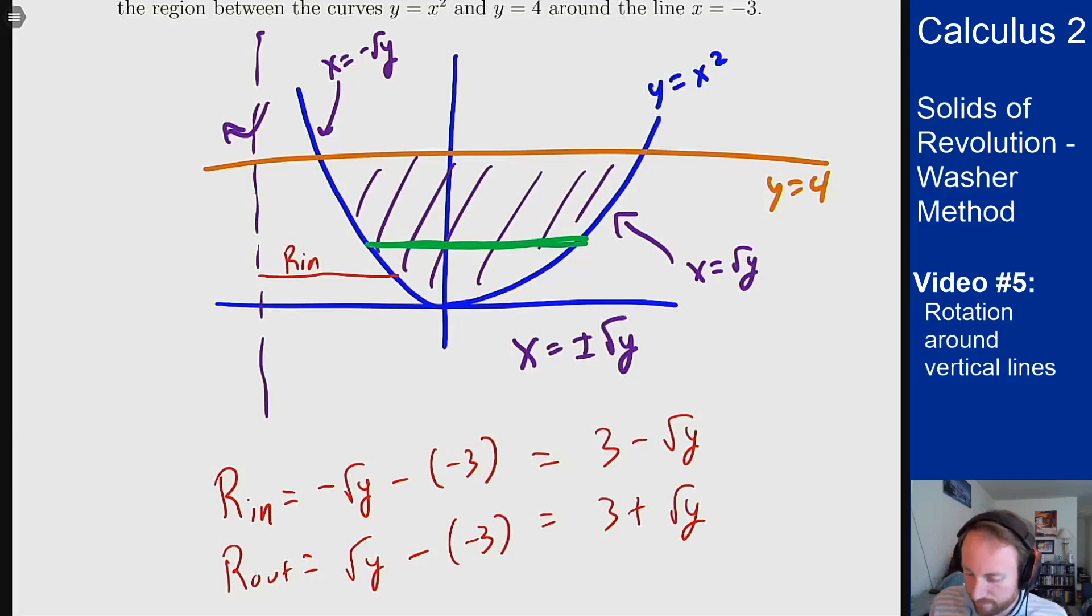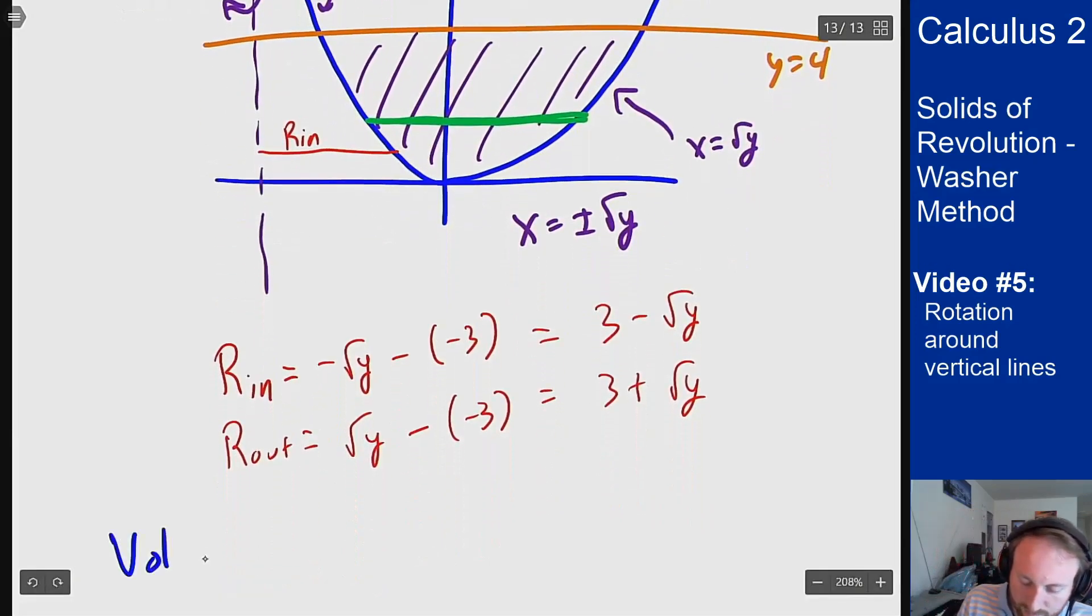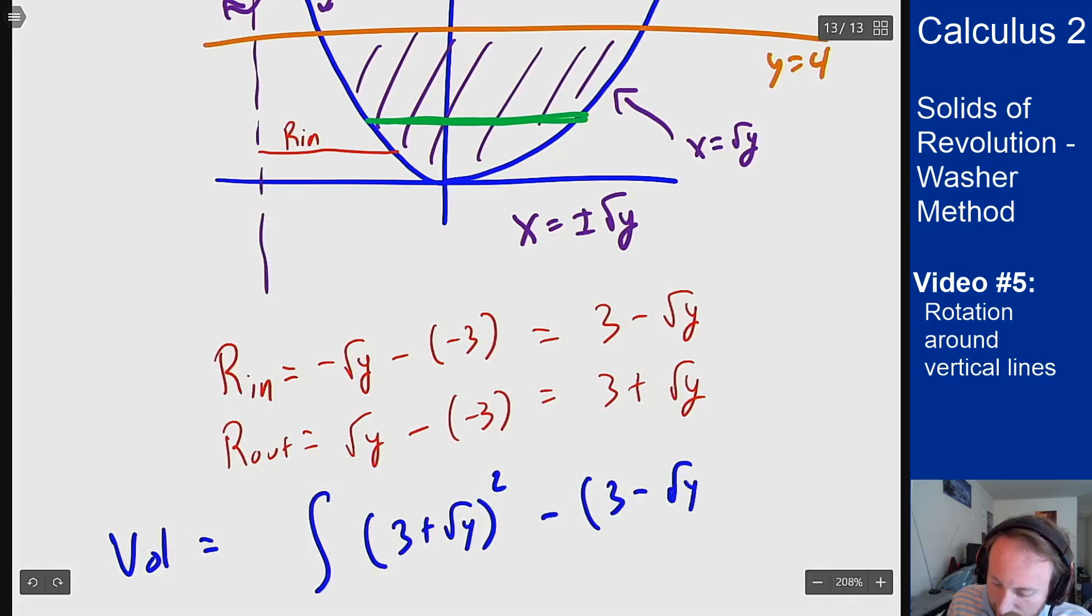Now I want to set up the integral. So the volume should be computed by some integral of the outer radius 3 plus root y squared minus the inner radius 3 minus root y squared dy with a pi out front.